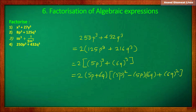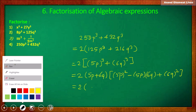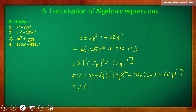So it is equal to 2 into (5p plus 6q) into bracket (25p squared minus 30pq plus 36q squared).